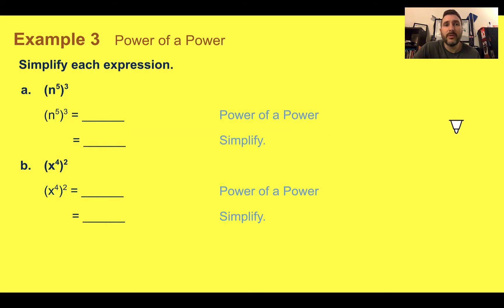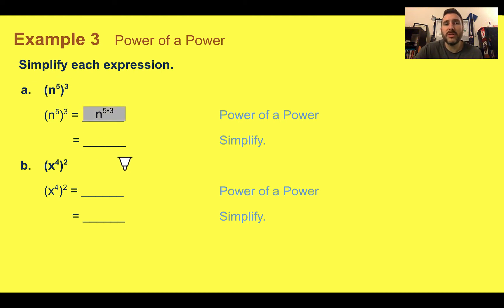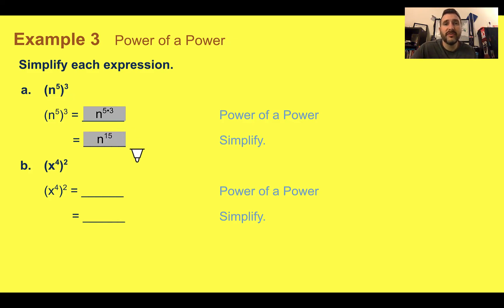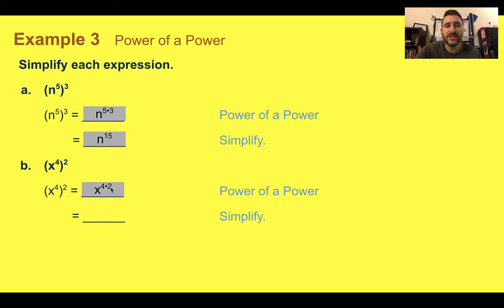Example three, power of a power — simplify each expression. First, we have n to the fifth raised to the third. We see a power in parentheses raised to a power outside, so five times three is 15 — this simplifies to n to the fifteenth. In the next one, we have x to the fourth raised to the second. Four times two is eight, giving x to the eighth.